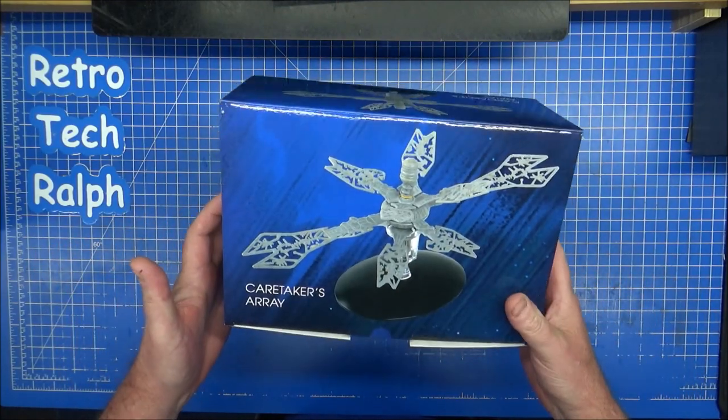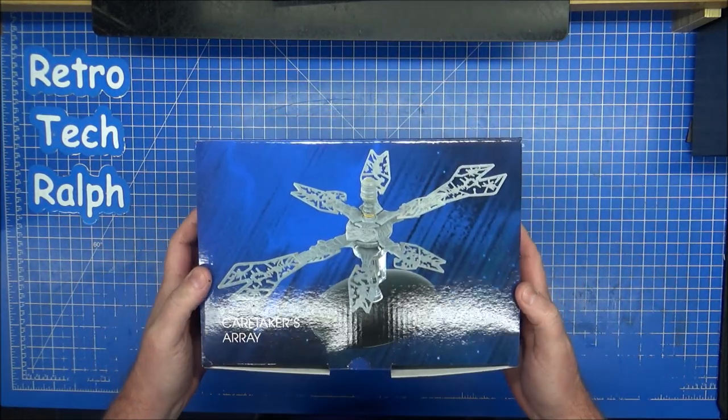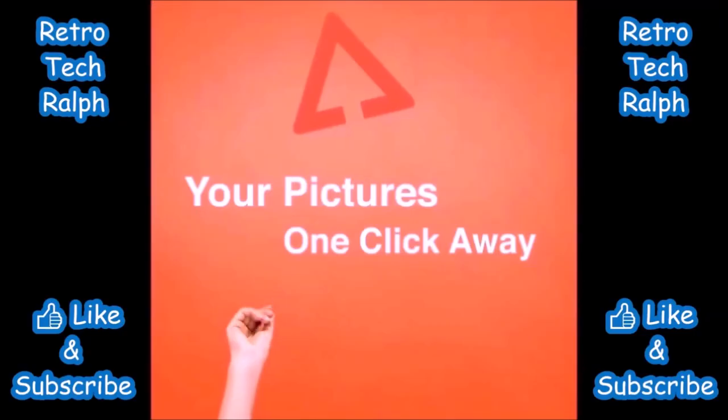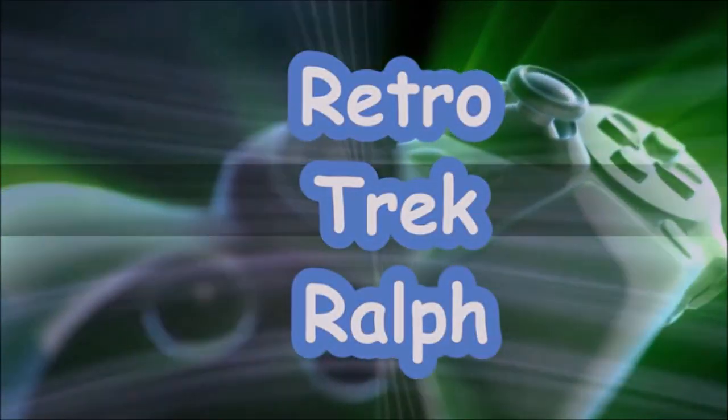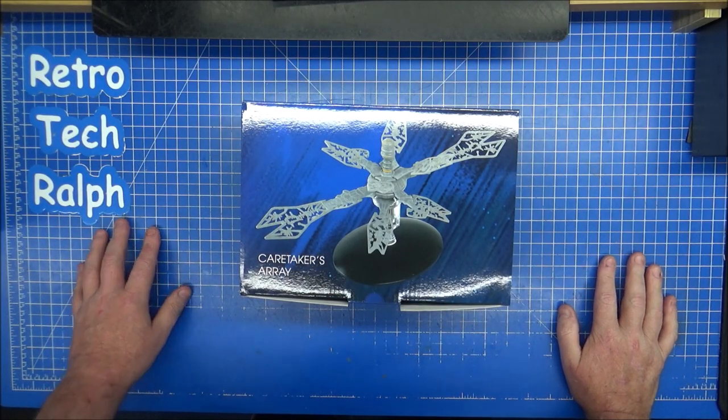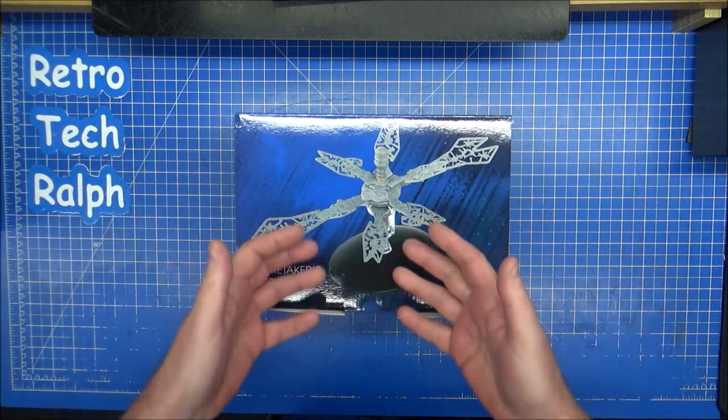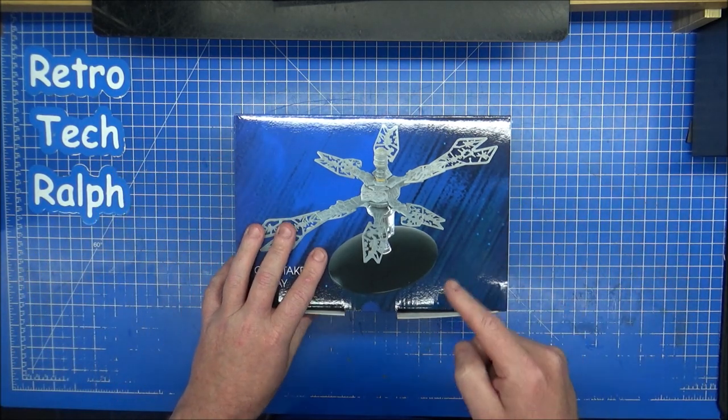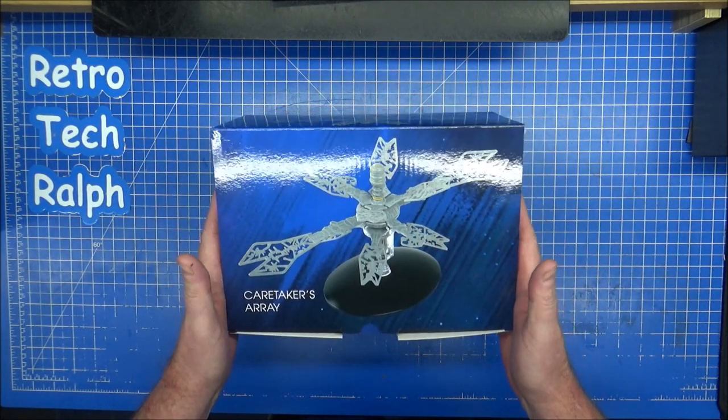It's the previously unreleased Caretaker's Array from Star Trek Voyager by Eaglemoss Hero Collector. Hi guys, Retro Tech Ralph here with another Star Trek Eaglemoss Hero Collector model and magazine review. This time, this is special number 30, the unreleased Caretaker's Array from Star Trek Voyager, from the pilot of Star Trek Voyager.